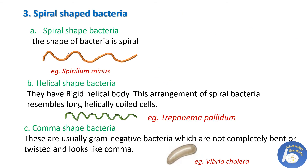Third is spiral-shaped bacteria, which has three subcategories. The first is typical spiral-shaped bacteria — spiral-shaped bacteria implicated in rat bite fever have this type of shape. Next is helical-shaped bacteria, which have a rigid helical body and resemble long helically coiled cells. An example is Treponema pallidum, which causes the sexually transmitted disease syphilis. Next is comma-shaped bacteria — usually gram-negative bacteria that are not completely bent and look like a comma. An example is Vibrio cholerae, responsible for cholera.